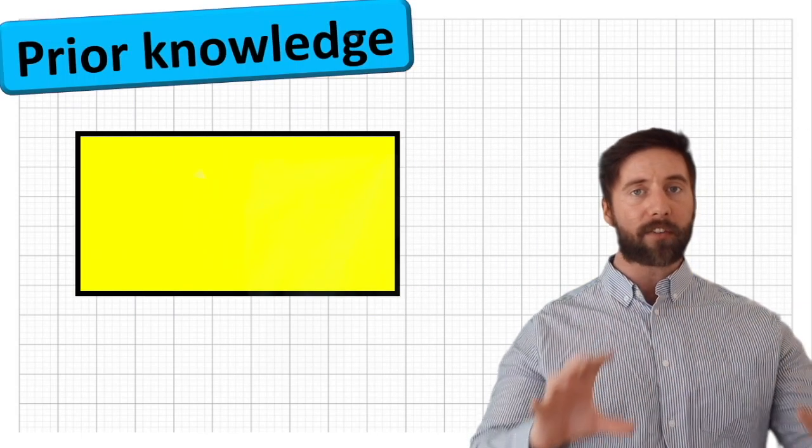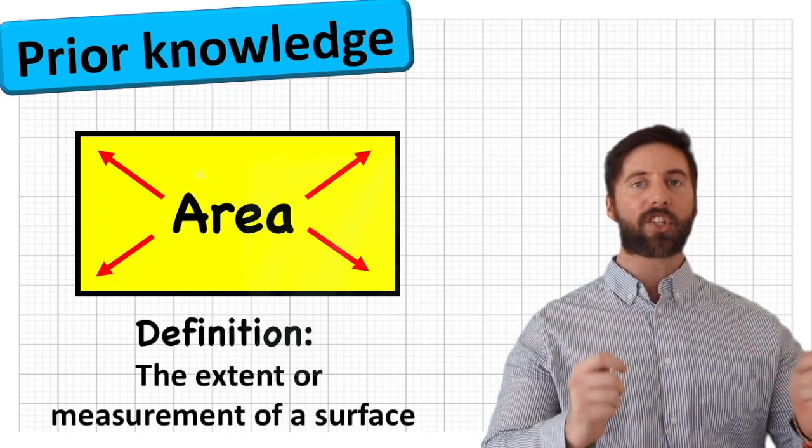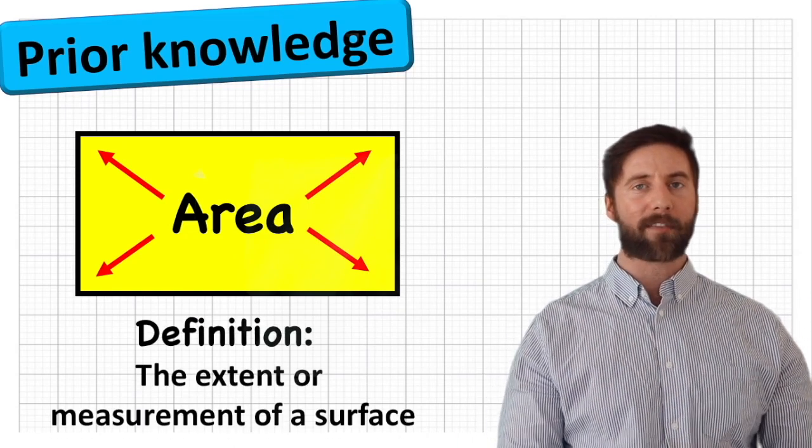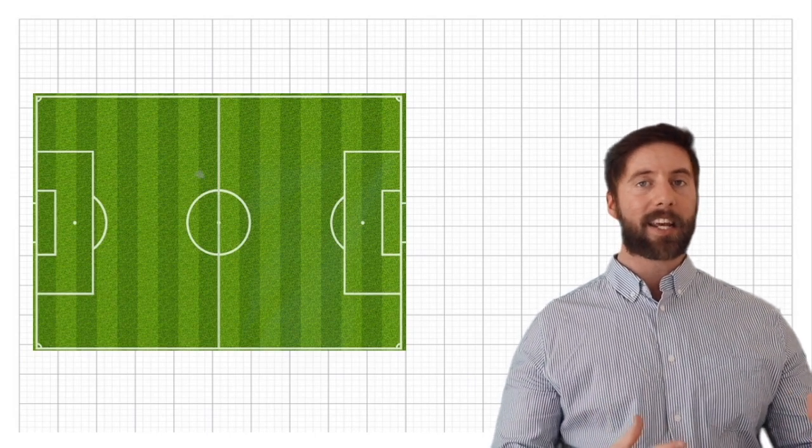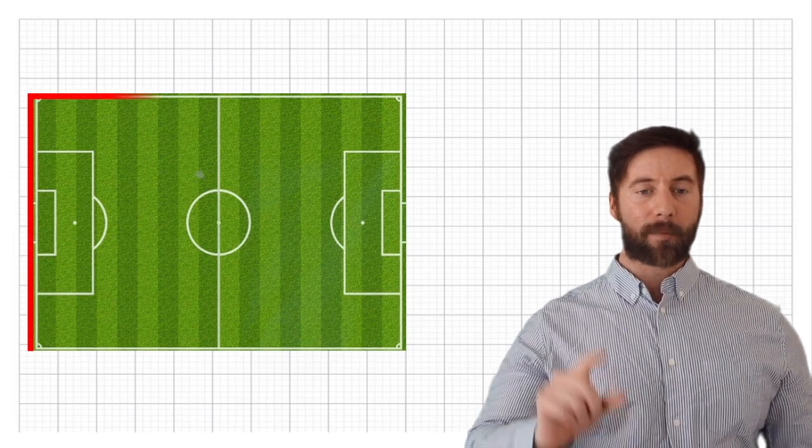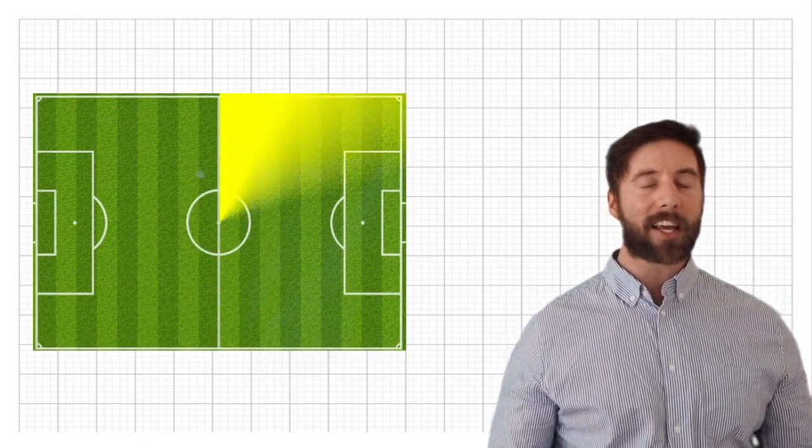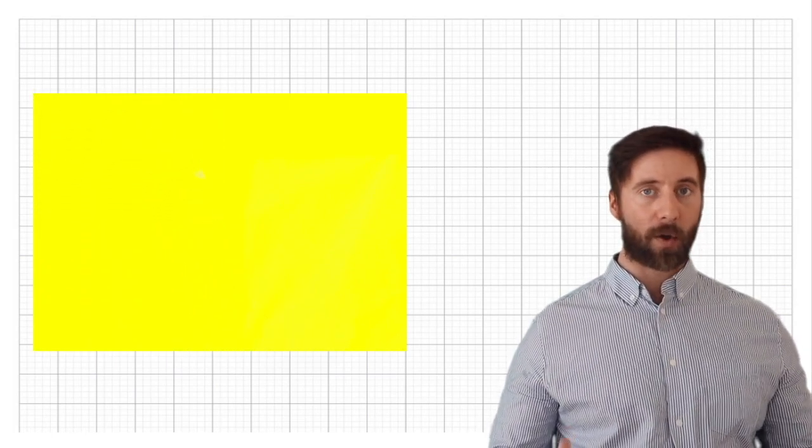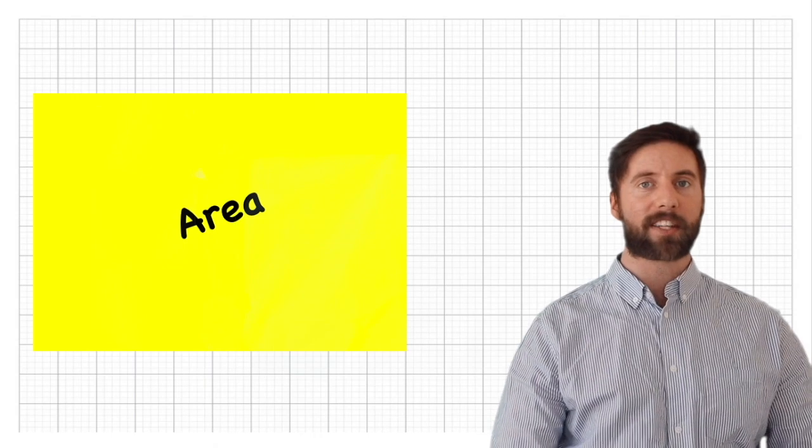Hopefully we understand that the area of a shape can be defined as the surface that that 2D shape takes on any given surface. For example, a good way of thinking about it is if we were looking at a football pitch.